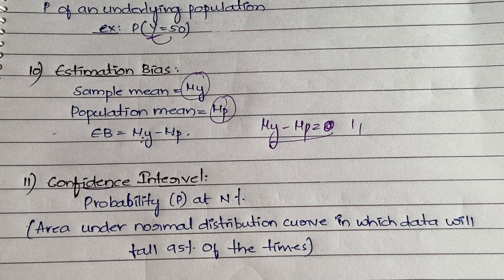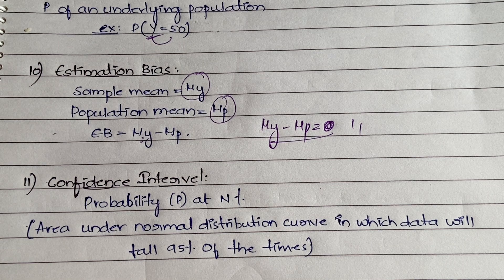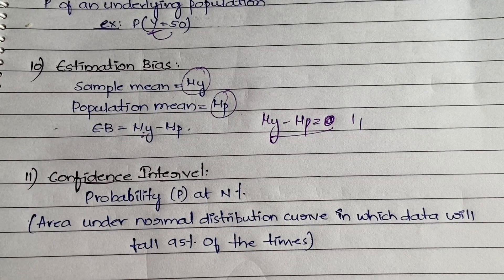For example, biased data means among 60 students in a class, you are studying only about girls or only about boys. If you study only about girls you are not concentrating on boys, so you are showing some bias between girls and boys — that difference is your bias.